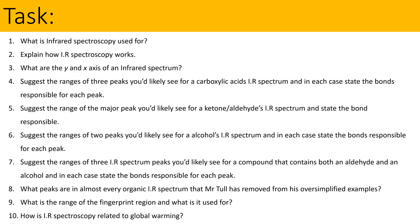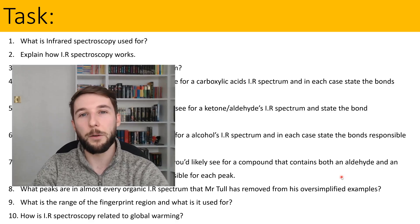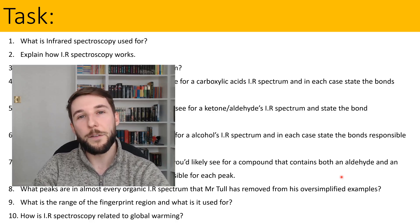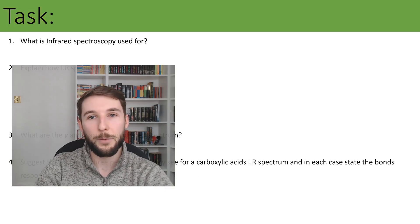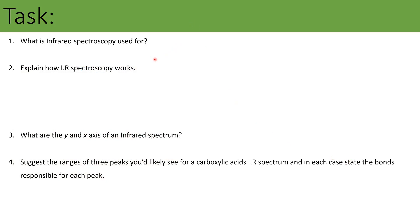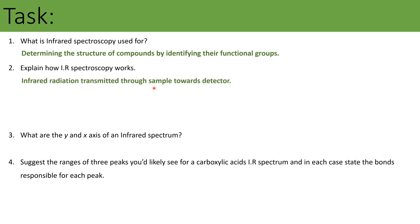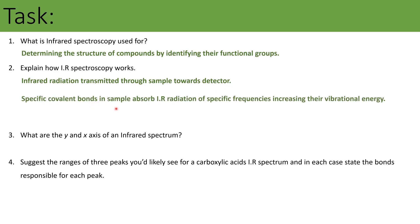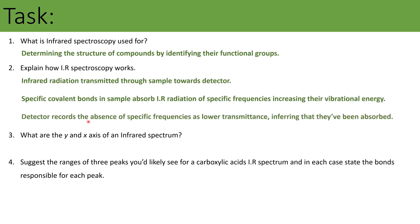Now we've got some review questions — pause the video and upload your answers to your Google Doc, then come back and we'll go through them. What is infrared spectroscopy used for? Determining the structure of compounds by identifying their functional groups. How does it work? We transmit infrared radiation through the sample towards a detector. Specific covalent bonds in the sample absorb infrared radiation of specific frequencies, increasing their vibrational energy. The detector records the absence of specific frequencies as lower transmittance, and we link the specific frequencies absorbed to particular covalent bonds. The y-axis is transmittance or percentage transmittance; the x-axis is wave number, which is one divided by the wavelength.